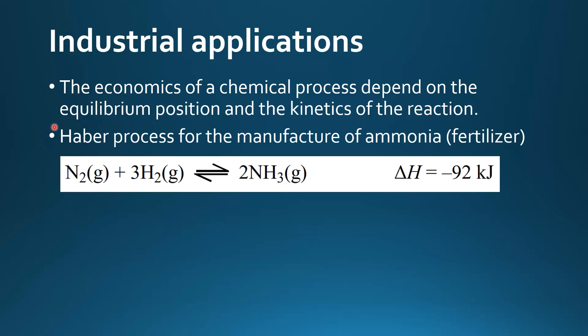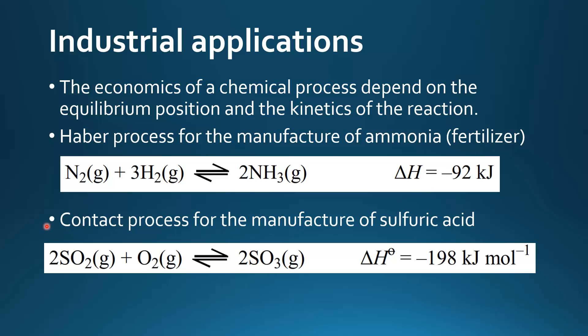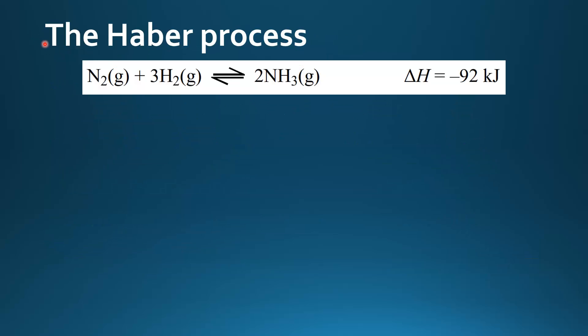The two chemical processes we'll look at are the Haber process for the manufacture of ammonia which is used to make fertilizer and the Contact process for the manufacture of sulfuric acid.